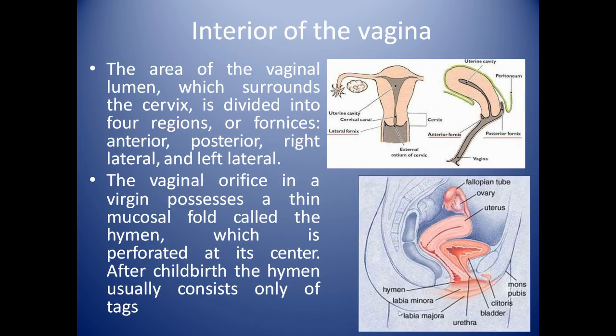Now we will see the interior of the vagina. The area of the vaginal lumen which surrounds the cervix is divided into four regions of fornices: anterior, posterior, right lateral, and left lateral. The vaginal orifice in a virgin possesses a thin mucosal fold called the hymen, which is perforated at its center. After childbirth, the hymen usually consists only of tags.